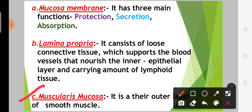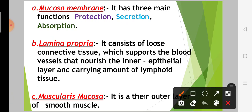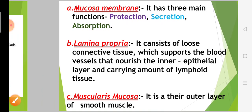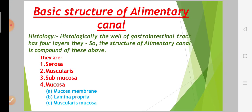Now let's see the muscularis mucosa. It is the outer layer of smooth muscle within the mucosa.